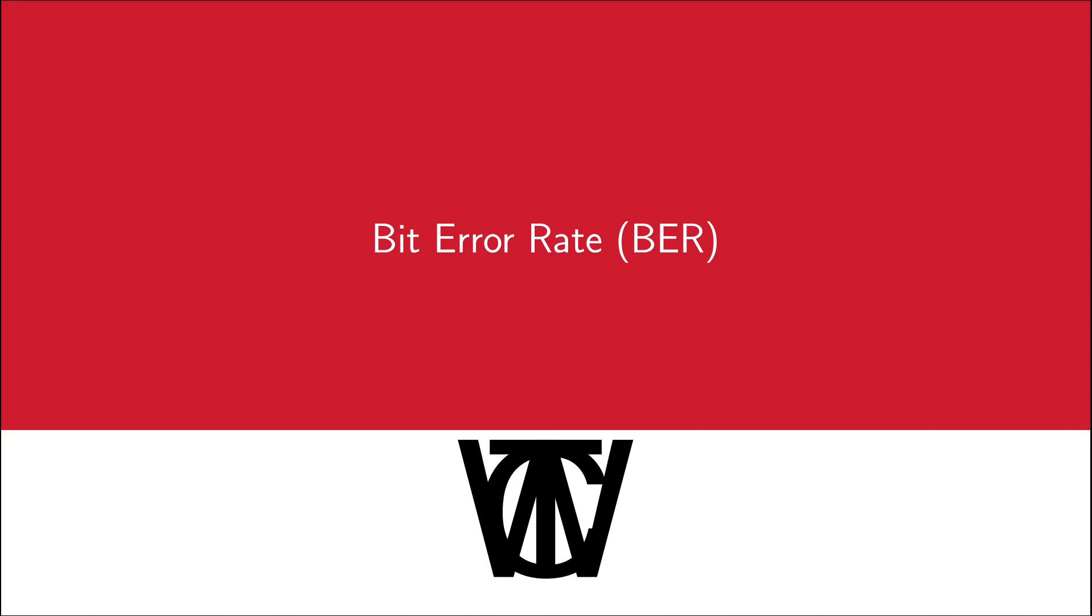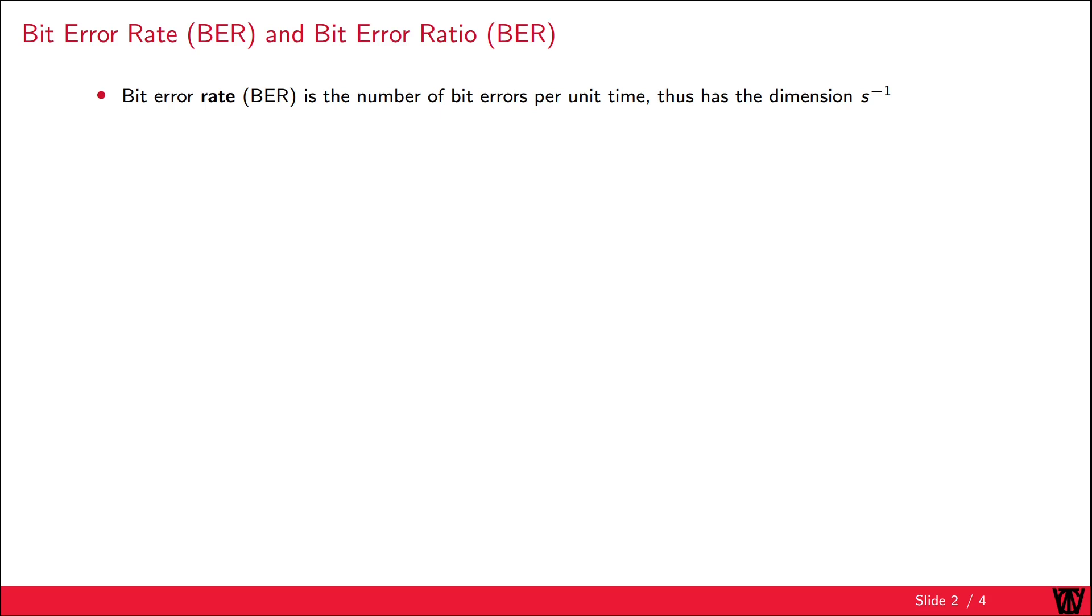In today's video, I will explain the performance indicator called bit error rate. The bit error rate, or BER, is the number of bit errors per unit time and has a dimension of s^-1.